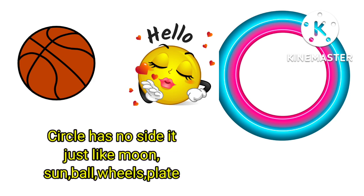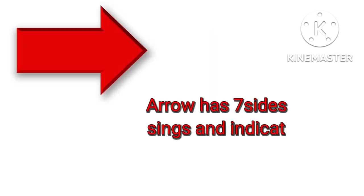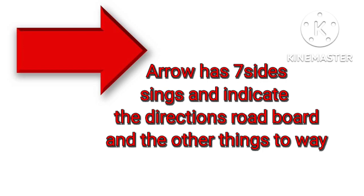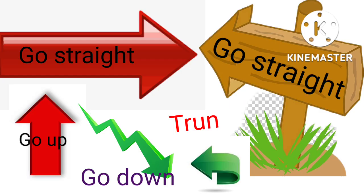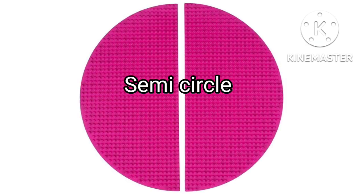Circle has no sides. It's just like Moon, Sun, Balls, Plates and similar shapes. It includes curves: up curve, down curve, and semi-circles. This makes circle writing easy.